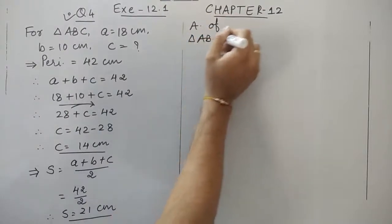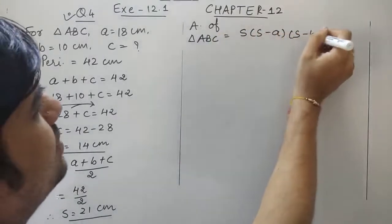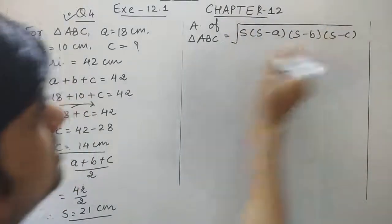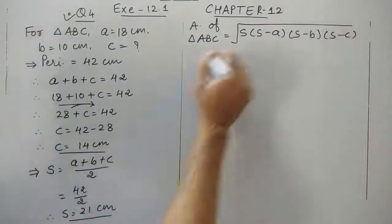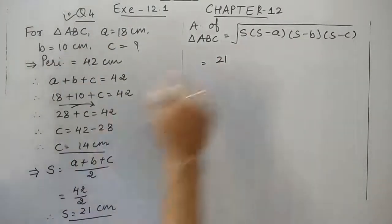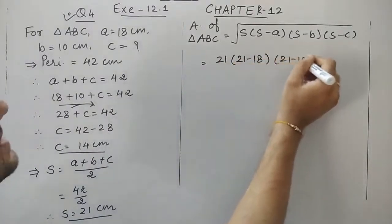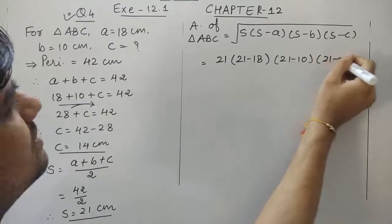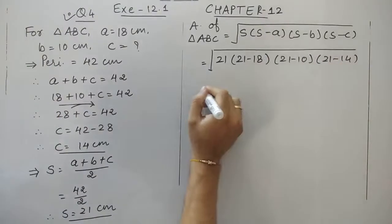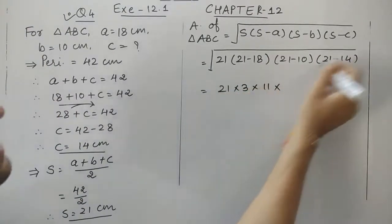Now we have S and all 3 sides. Let's find the area of the triangle using Heron's formula, writing down the formula and substituting all values. S is 21, which is the largest among all sides. So: 21 minus 18 equals 3, 21 minus 10 equals 11, and 21 minus 14 equals 7.